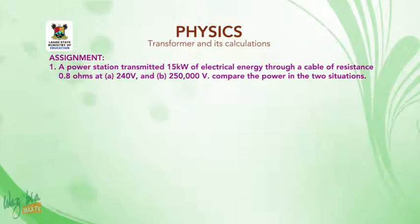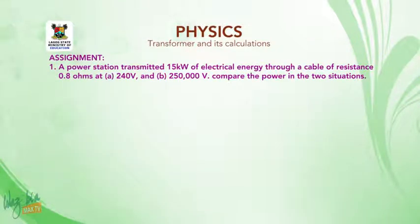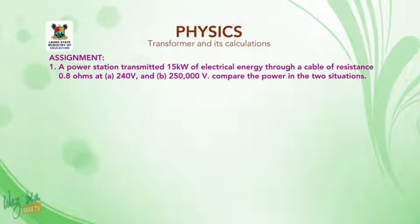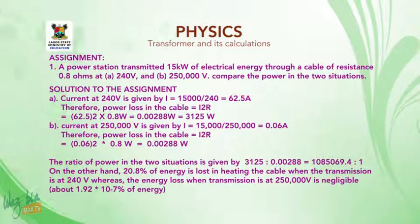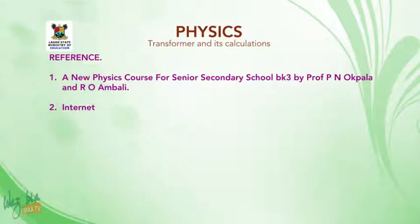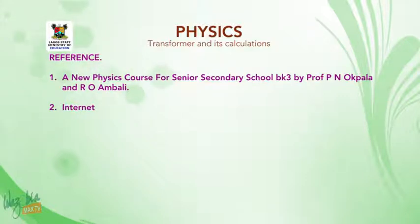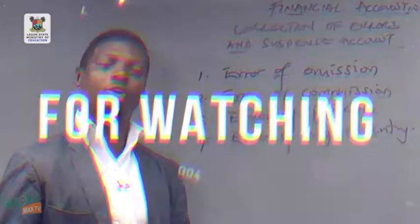Assignment. A power station transmitted 15 kW of electrical energy through a cable of resistance 0.8 ohms at: A, 240 volts, and B, 250,000 volts. Compare the power loss in the two situations. The solution to the assignment is given on the screen — attempt your own and compare your answer with the solution on screen. References: number one, A New Physics Course for Senior Secondary School by Professor P. Nopala and Aro Ambali; and number two, internet. Thank you very much.